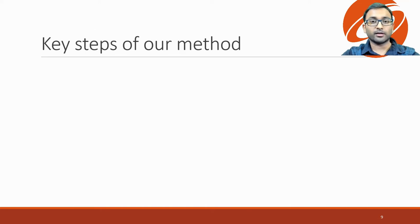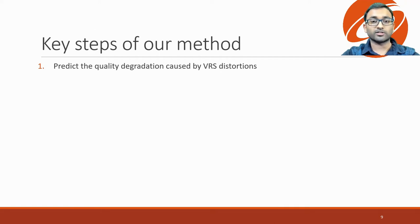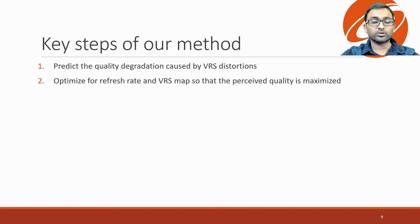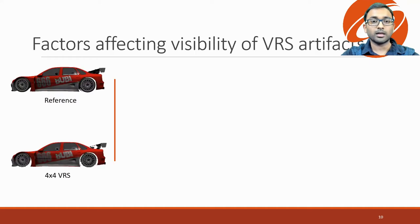Our method can be divided into two major steps. We first develop a perceptual model that can predict if reducing shading resolution for a given texture will lead to visible artifacts. The model is mapped to a subjective quality scale by conducting a psychophysical experiment. Finally, during rendering, we use this quality model to derive an optimal VRS map and refresh rate. Let's get into the details of the first step — that is, when are VRS artifacts visible?